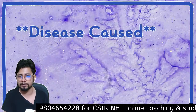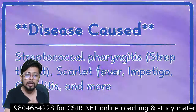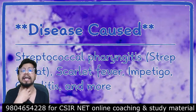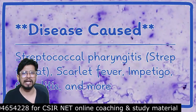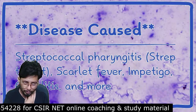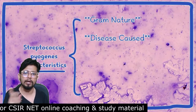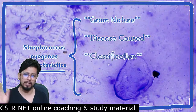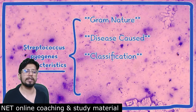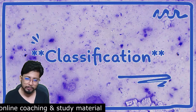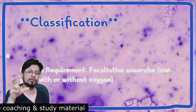The next important parameter is the diseases caused by Streptococcus pyogenes. It causes streptococcal pharyngitis, simply known as strep throat. It can also cause scarlet fever, impetigo, and many other diseases.